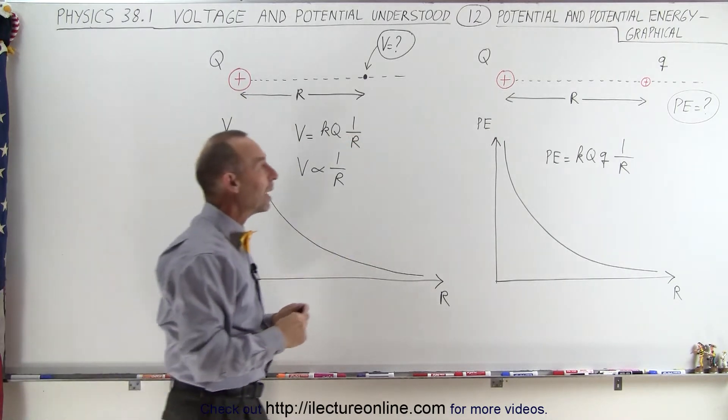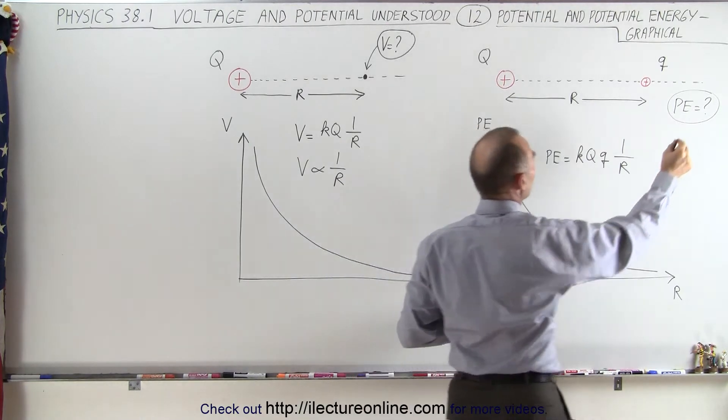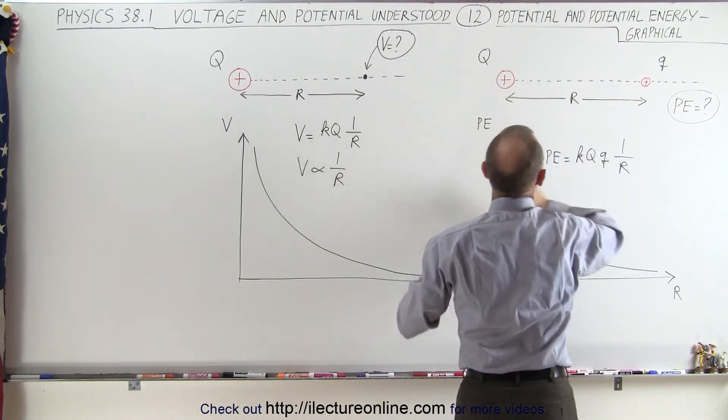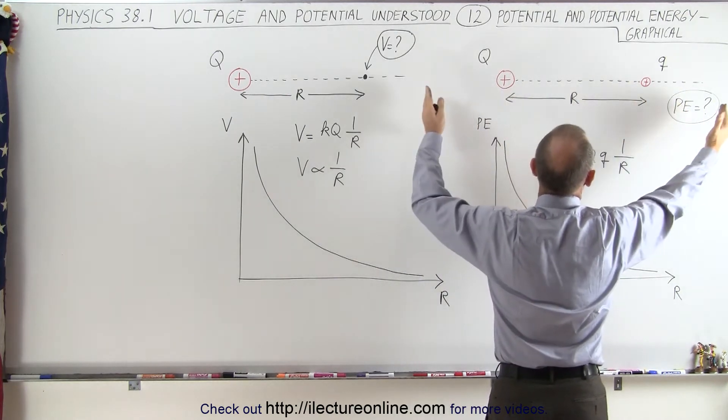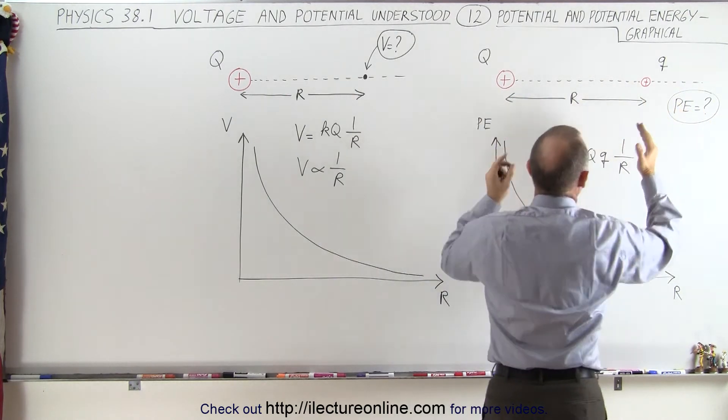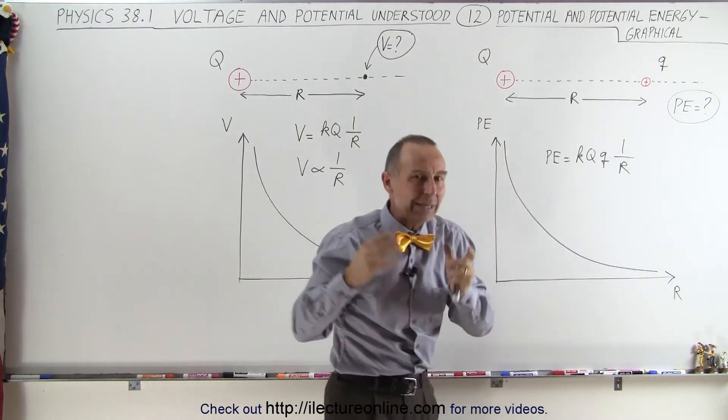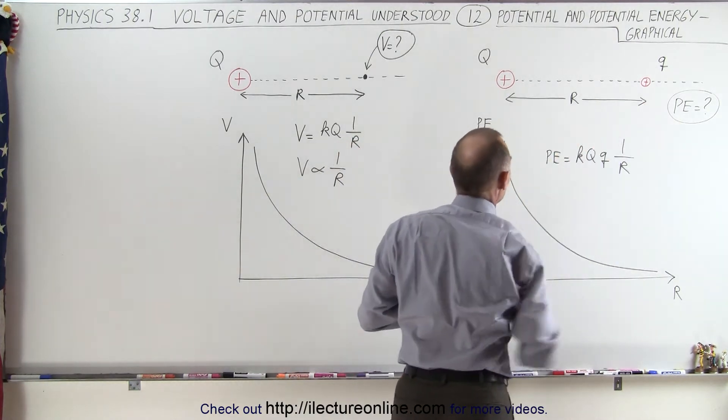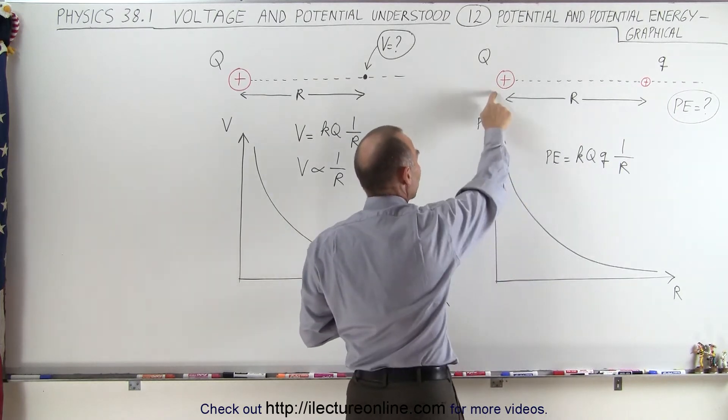In the second case, we now have a second charge, a small q that we bring into the presence of the big Q. And therefore, there's going to be an interaction that's going to require a certain amount of work. So finally, the potential energy is equal to the work that it took to bring the charge small q to that location at distance R away from the point charge.